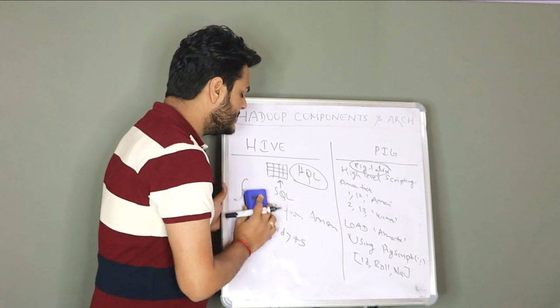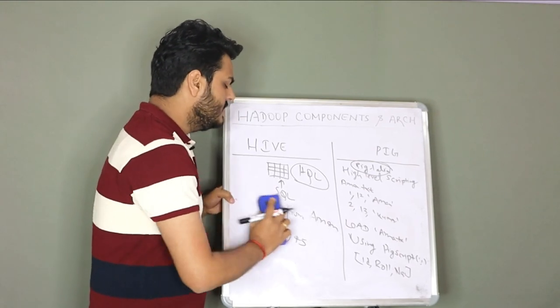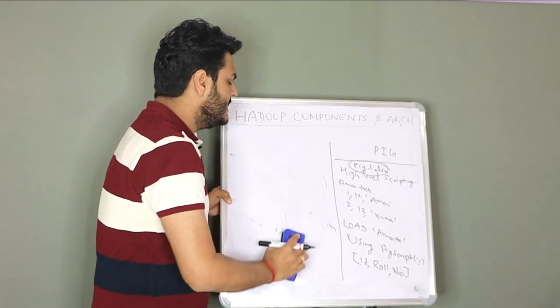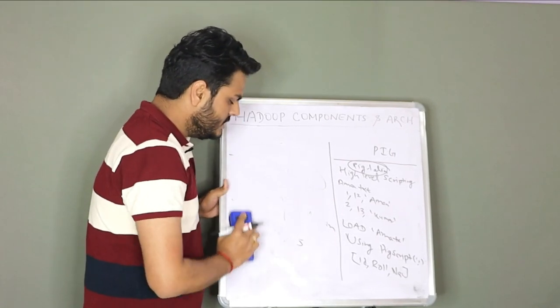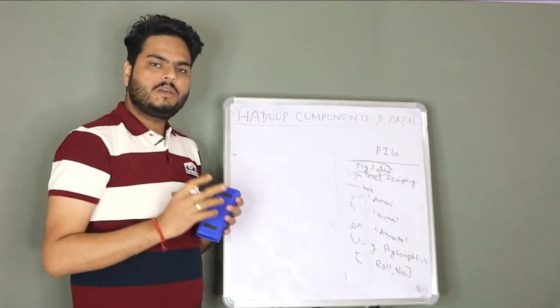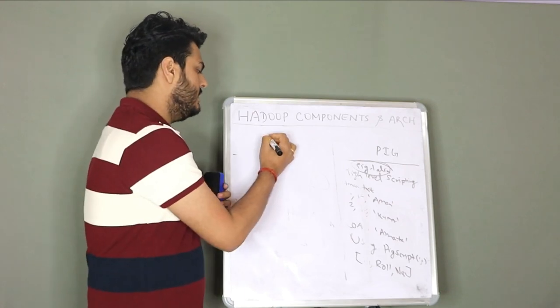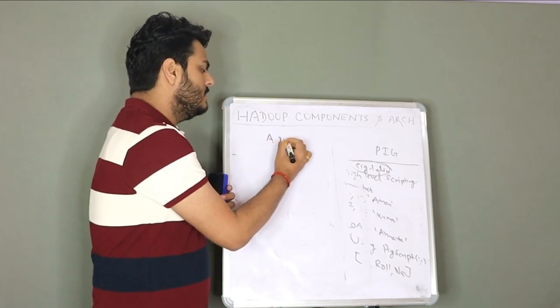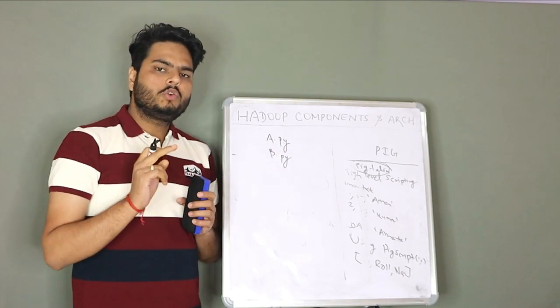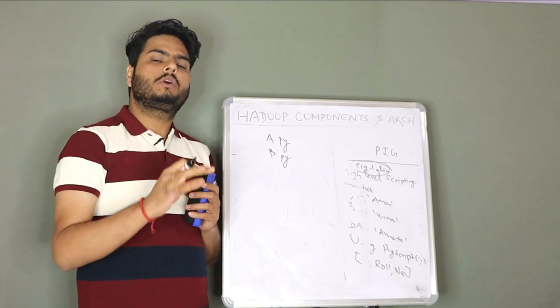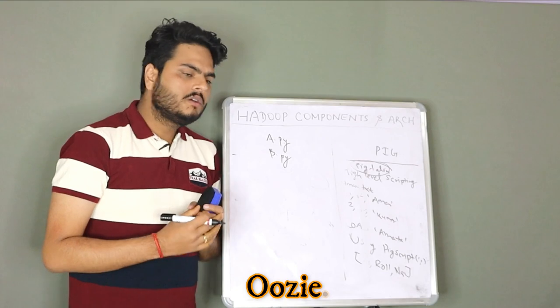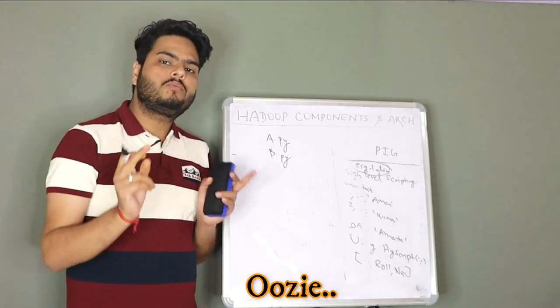Before that, I also want you to understand what is meant by Uzi and Zookeeper. Many times you will need to run the script in schedule. For example, let's say there is a file a.py and there is another file b.py, two Python files. You want to run these two Python files one by one in Hadoop cluster. So how you do it is you just schedule this in a workflow.